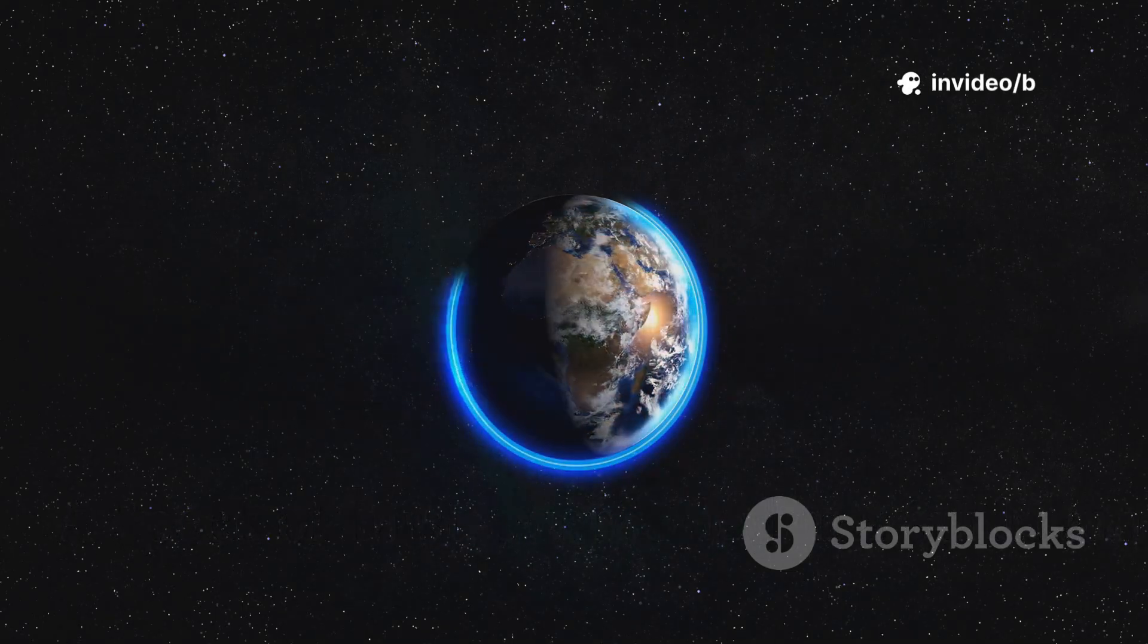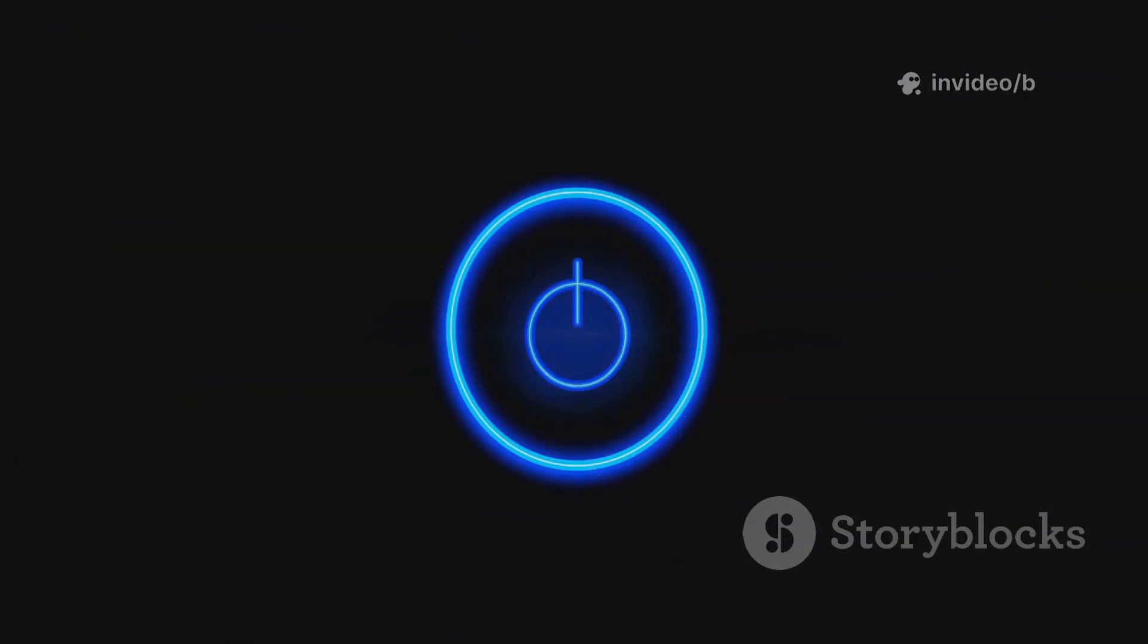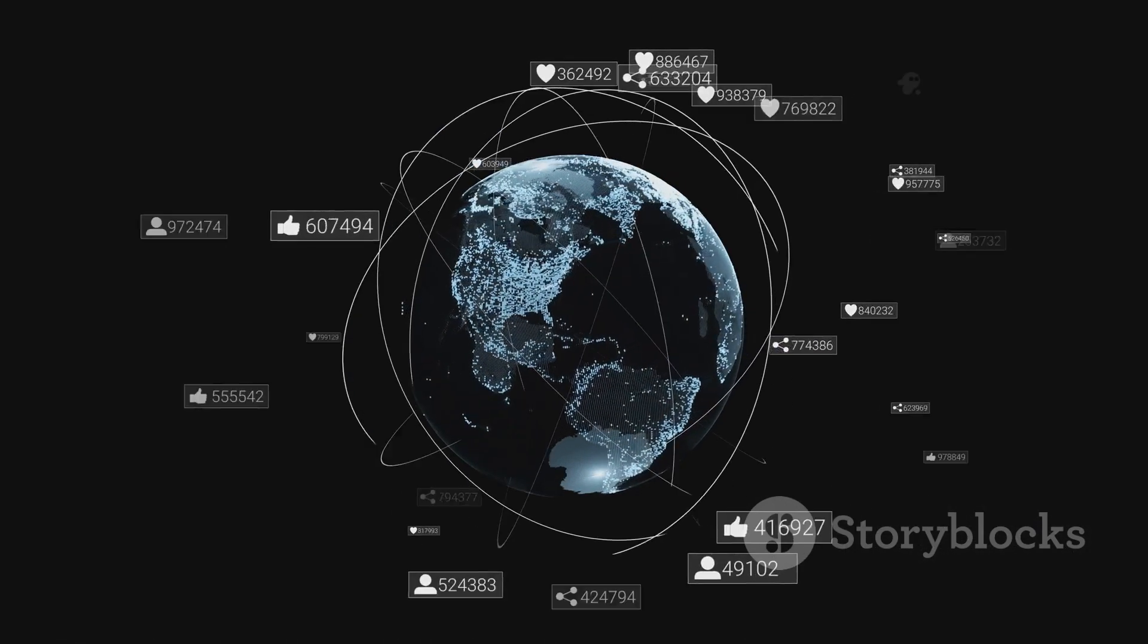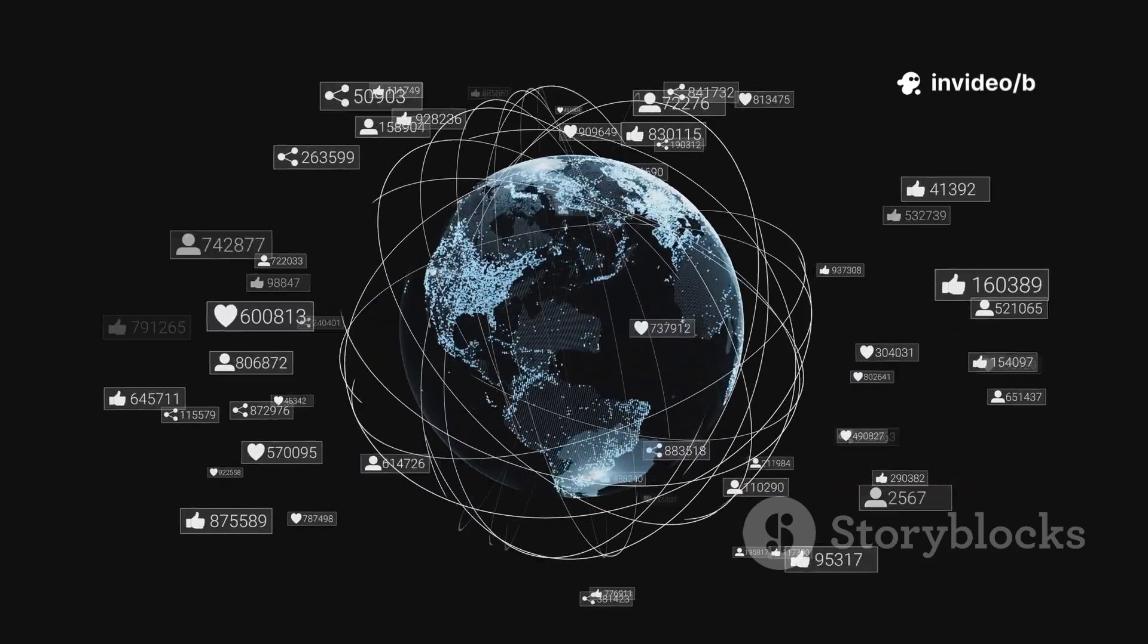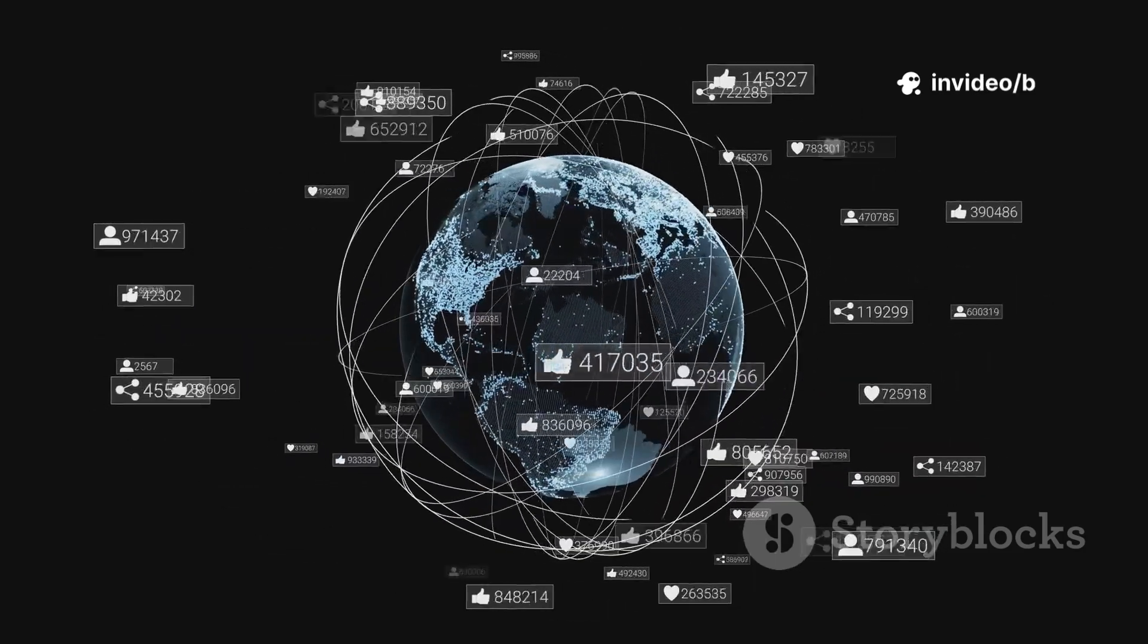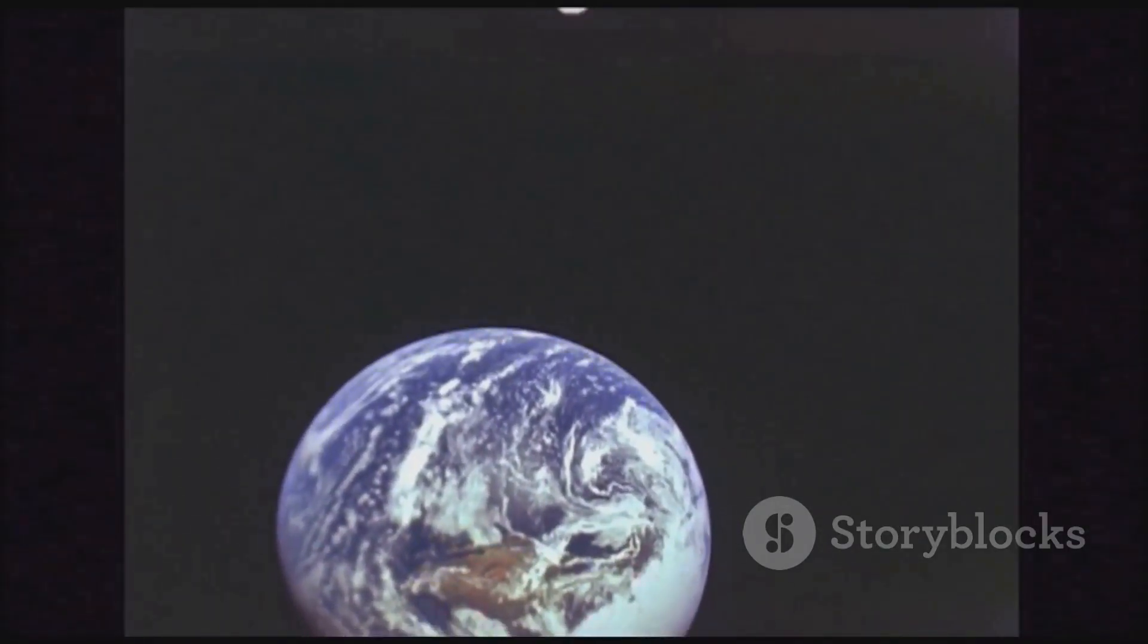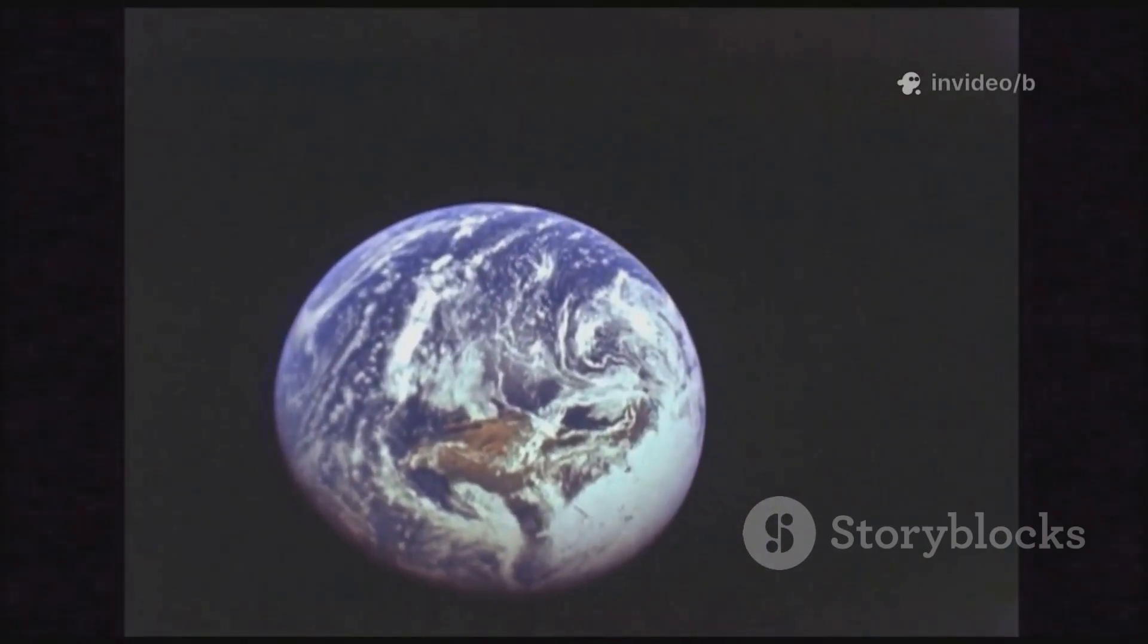In 1990, Voyager 1 turned back and captured a photo of Earth, a tiny, pale blue dot in a vast sea of black. Carl Sagan's words about that image have echoed for decades. On that speck, everyone we've ever known has lived out their lives. The photograph is a lesson in humility, showing our world with no borders or divisions, just a fragile stage in a vast cosmic arena.